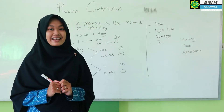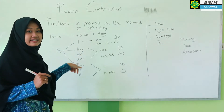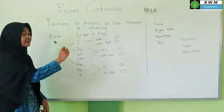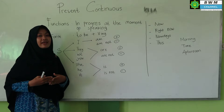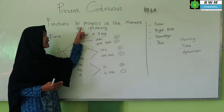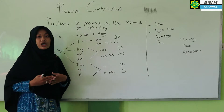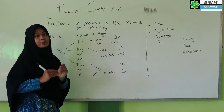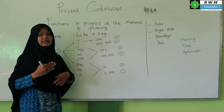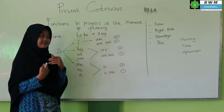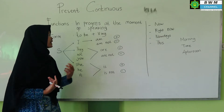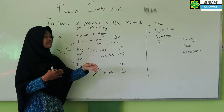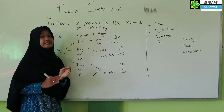Now, let's look more closely at Present Continuous. Here on the board there are some notes. Present Continuous Function — 'in progress at the moment of speaking.' Simply put, Present Continuous means something is currently in progress. 'At the moment' means what is happening today, and 'speaking' means while talking. So simply, Present Continuous is an event that is happening today and is currently ongoing.